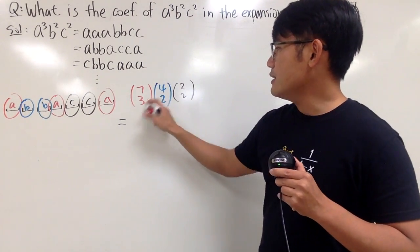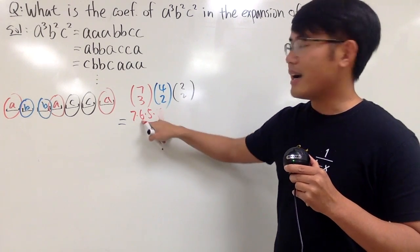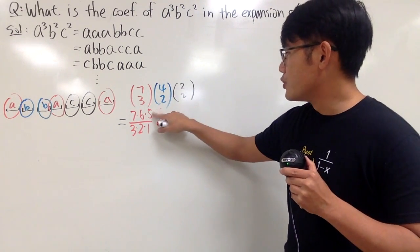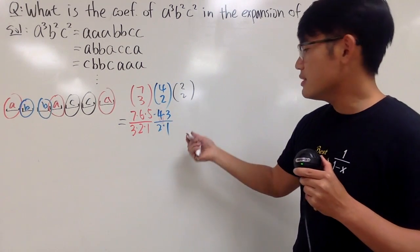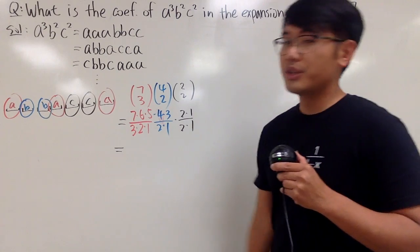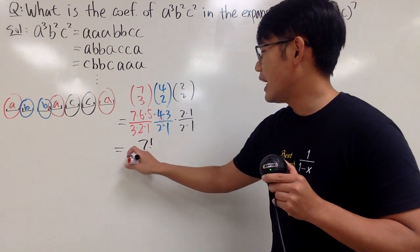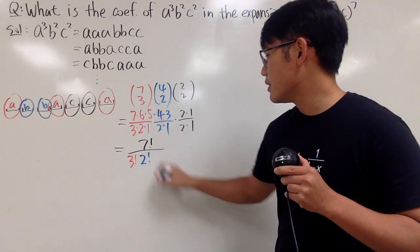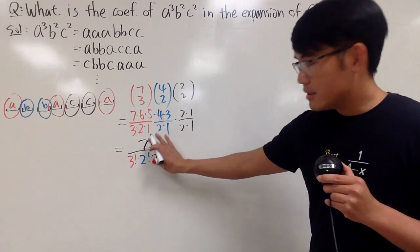You can work this out. Seven choose three is seven times six times five divided by three factorial. Four choose two is four times three divided by two times one. And two choose two is two times one over two times one. On the top, you happen to get seven factorial; on the bottom, you get three factorial, two factorial, and two factorial — all multiplying together.